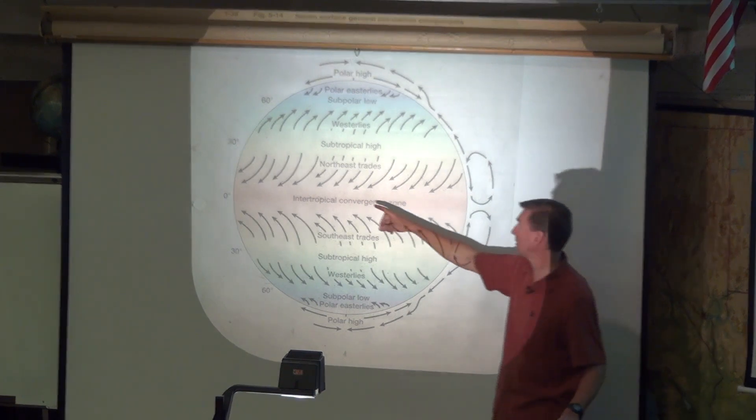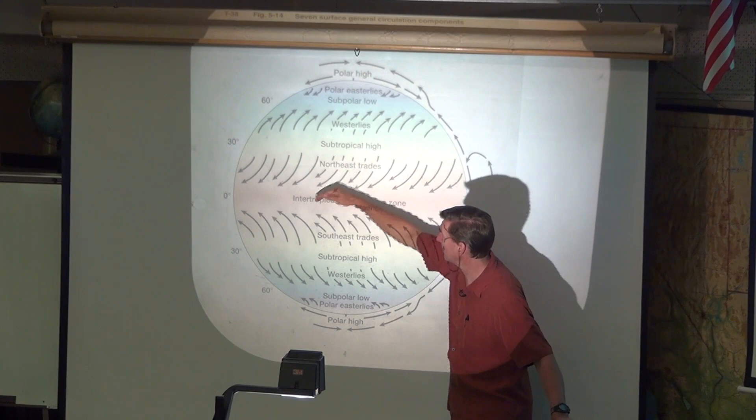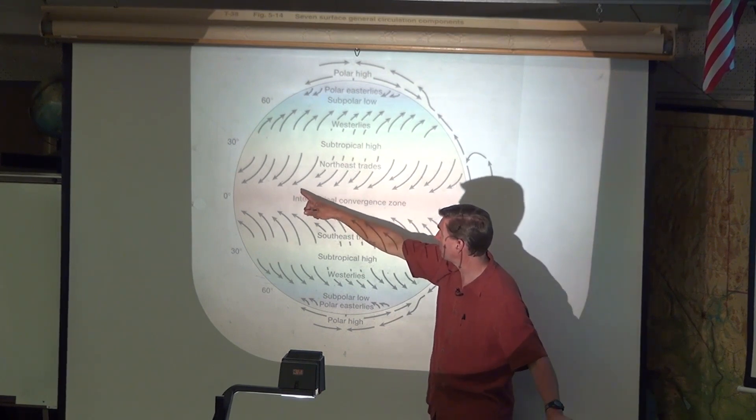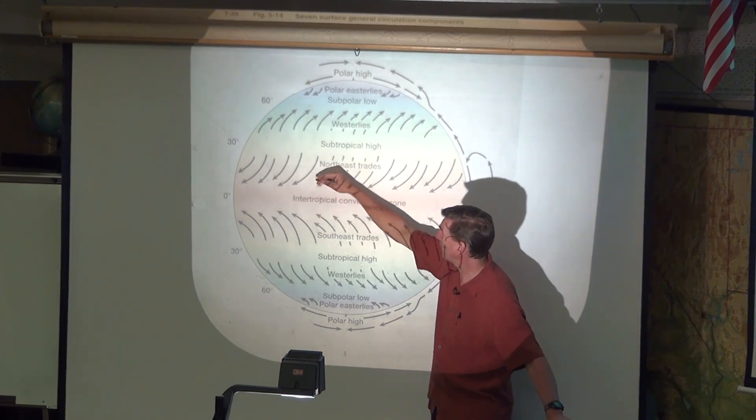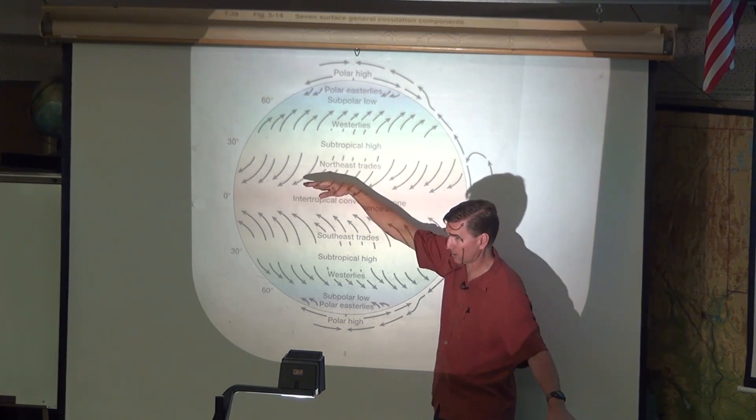It also creates a vacuum here. So as air is sinking off of this, it is then spinning into the intertropical convergence zone from a high to a low. And it's turning to the right. If you actually get upside down, you can see this is going to the right.